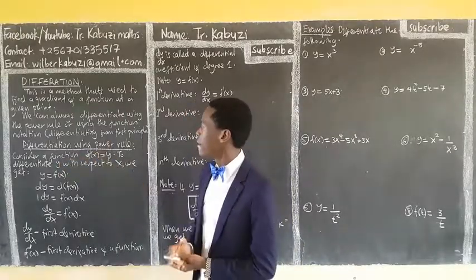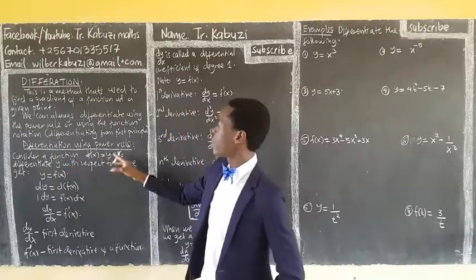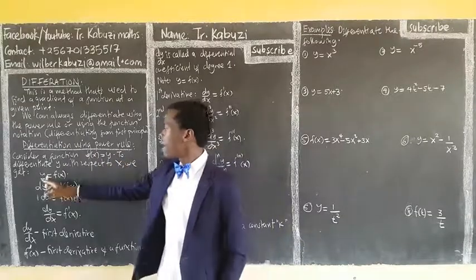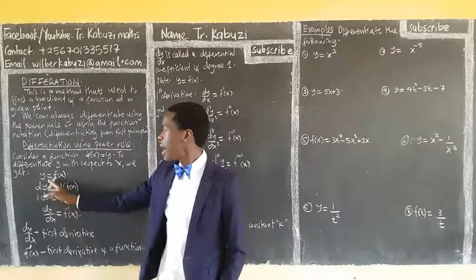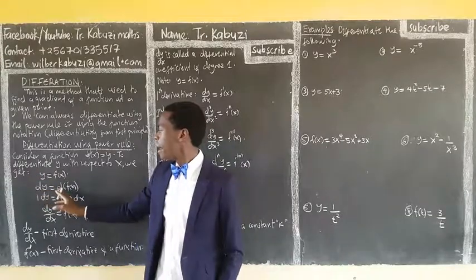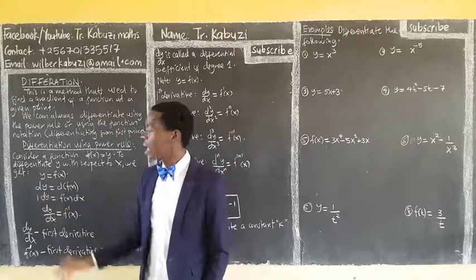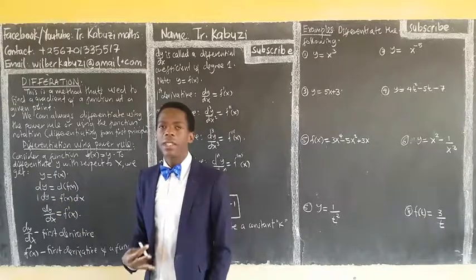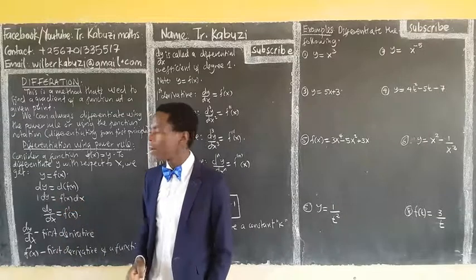Let us now see differentiation using the power rule. Consider the function f of x equal to y. When we differentiate y with respect to x, we differentiate both sides. This shows that I am differentiating y, and this shows that I am differentiating f of x. So when I differentiate y I get dy/dx. We use a prime to show that we have differentiated a function.